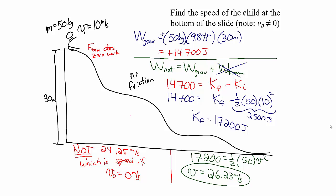A mistake some people make is finding the speed, realizing they forgot to include the initial kinetic energy, and then just trying to add the initial speed onto their final speed. That does not work that way. You have to include the initial kinetic energy, find the work done, and use that to get the final speed.